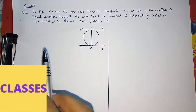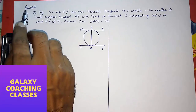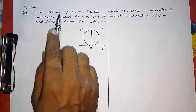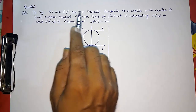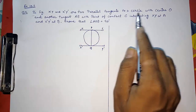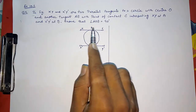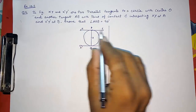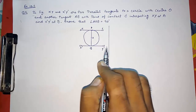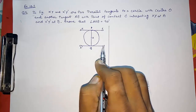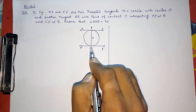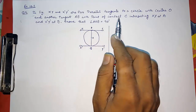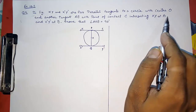Hello friends, today we are going to solve CBSE Class 10 Exercise 10.2 Question 9. In the given figure, XY and X'Y' are two parallel tangents to a circle with center O. Another tangent AB with point of contact C intersects XY at A and X'Y' at B.